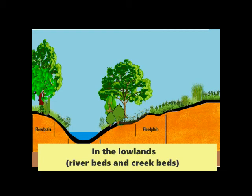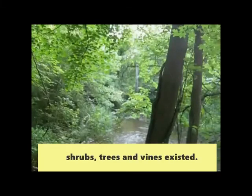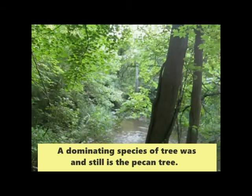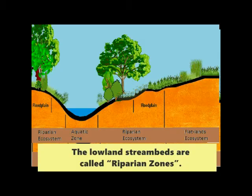In the lowlands — riverbeds and creek beds — shrubs, trees, and vines existed. A dominating species of tree was, and still is, the pecan tree. These lowland stream beds are called riparian zones.